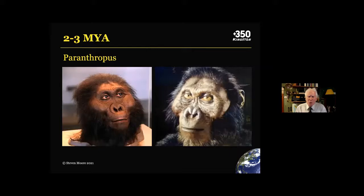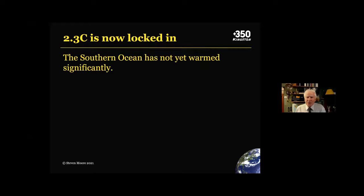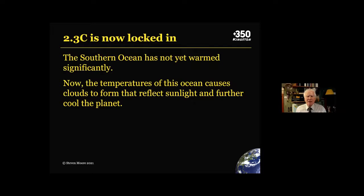The latest research also shows that the Paris Accord is irrelevant. More than 2 degrees Celsius is already locked in by the amount of carbon we have in the atmosphere already — you can look at this in Nature Climate Change. We have to keep in mind that if we stopped emissions tomorrow, the Earth is still going to warm for 50 more years. One of the reasons this is locked in is the Southern Ocean around Antarctica — the only ocean that has not yet warmed significantly — which causes clouds to form that reflect sunlight and cool the planet. When that region warms too, it will disperse the clouds and we'll have rising temperatures.